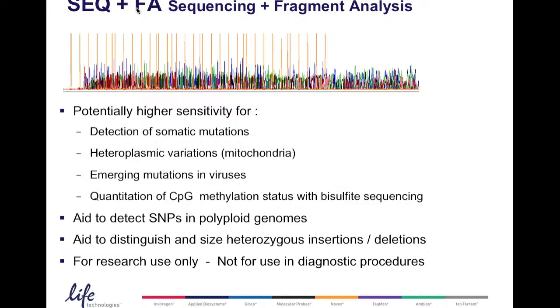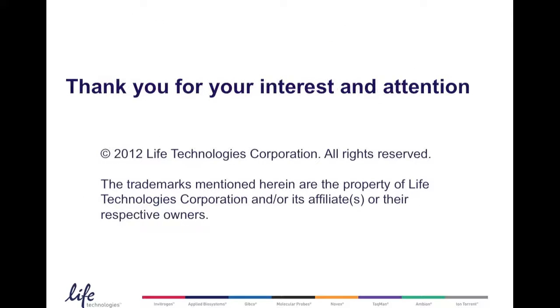Taken together, Seq Plus FA means sequencing plus fragment analysis. It gives you potentially higher sensitivity for detection of somatic mutations, for detection of heteroplasmic variations in mitochondrial DNA, possibly also detect emerging mutations in viruses, and allows you to quantitate CpG methylation status using bisulfide sequences. It's an aid to also detect SNPs in polyploid genomes, and allows you to distinguish and size heterozygous insertions and deletions. As usual, this application for researchers only is not meant for use in diagnostic procedures. Thank you for your interest and attention.